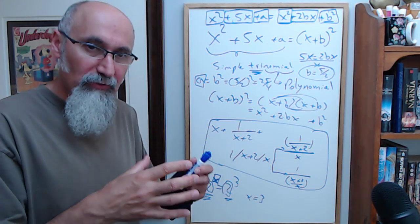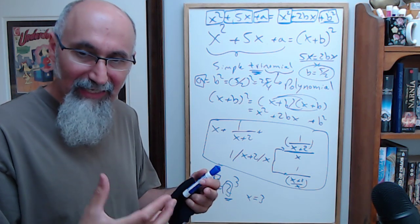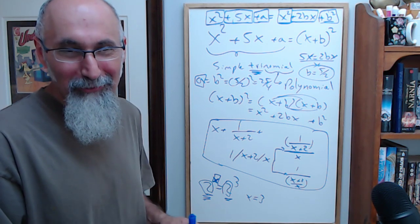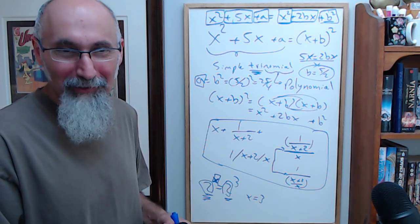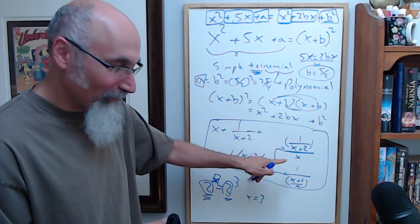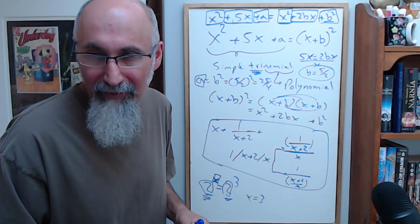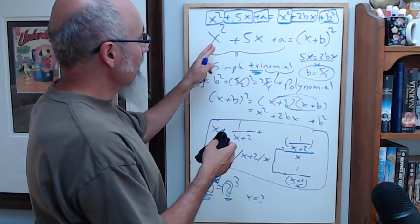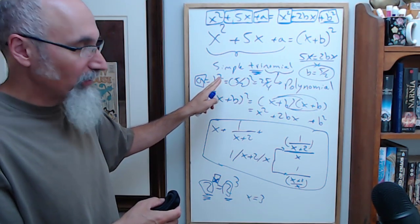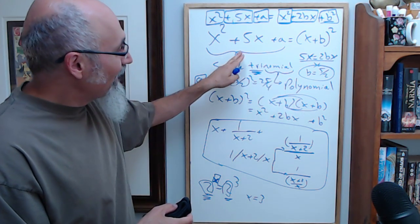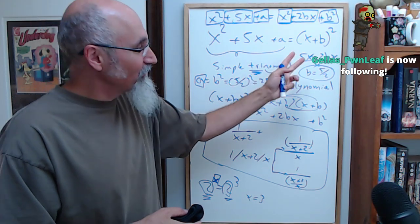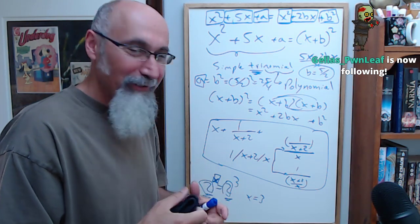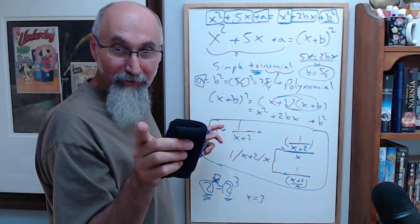It's not the rules that change, it's your approach to solving the problem — and that comes with practice and understanding what the problem is asking, not trying to memorize how to solve it. Now let's simplify the compound fractional expression: (x + 1/x+2) + (2/x) minus (1/x) minus (1/(x+2)).